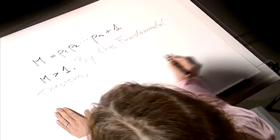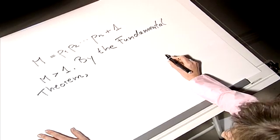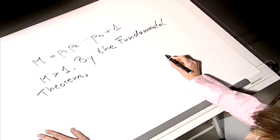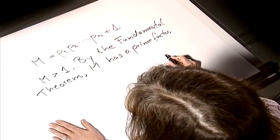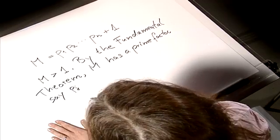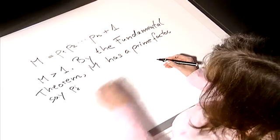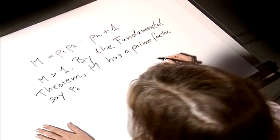By the Fundamental Theorem of Arithmetic, m is a product of prime numbers, which means m contains a prime factor. Let's call this prime factor pj. So pj must be one of our finitely many primes.